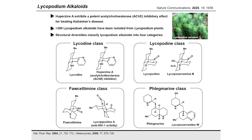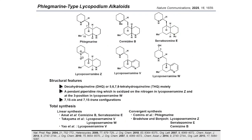The structural classes include the Lycopodium class, the fawcettimine class, and the phlegmarine class. Members of the phlegmarine class include phlegmarine, selagine B, selatozamine E, and lycoposilamines. These alkaloids share common structural features: a cis-decahydroquinoline or 5,6,7,8-tetrahydroquinoline core and an appended piperidine moiety, which is oxidized on the nitrogen in lycoposilamine Z and at the C3 position in lycoposilamine W.